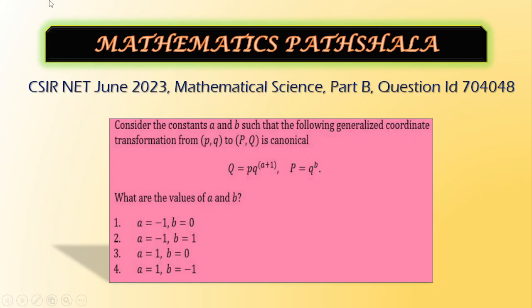The problem is: consider the constants A and B such that the following generalized coordinate transformation from (p,q) to (P,Q) is canonical, where Q = p·q^(a+1) and P = q^b.